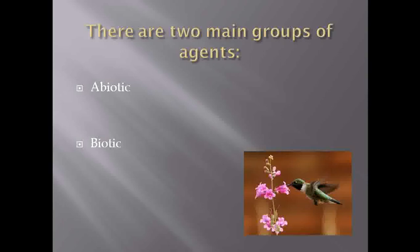The agents which are required for pollination are categorized into two types: abiotic agents and biotic agents. Abiotic agents are those non-living agents required for the process of pollination, just like water and wind, and they are categorized under the abiotic type.